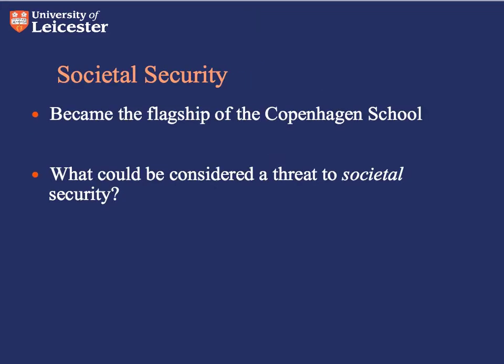The idea of societal security has become a flagship of the Copenhagen School. It provided a new level of analysis, acknowledging for the first time the distinction between the security of the state as a territory and the security of the population versus the ruling regime. The ruling regime may have security concerns of their own which put the security of the population at risk. The concept also highlights that the coherence of a society can be threatened by things other than simply violence or force, broadening the idea of what can be considered a security threat.